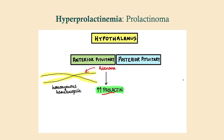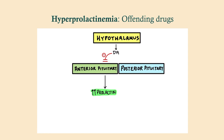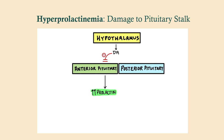Optic chiasm compression typically happens in men because men tend to get macroadenomas with prolactinomas, whereas women tend to get microadenomas, which are less likely to compress the optic chiasm. Prolactinomas secrete prolactin, so naturally you'll have a high prolactin level. As for antipsychotics — they inhibit dopamine, which is also known as prolactin inhibitory factor. Dopamine inhibits prolactin release, so blocking dopamine takes the foot off the brake and increases prolactin. Similarly, damage to the pituitary stalk reduces dopamine reaching the anterior pituitary, again removing that inhibition and raising prolactin.